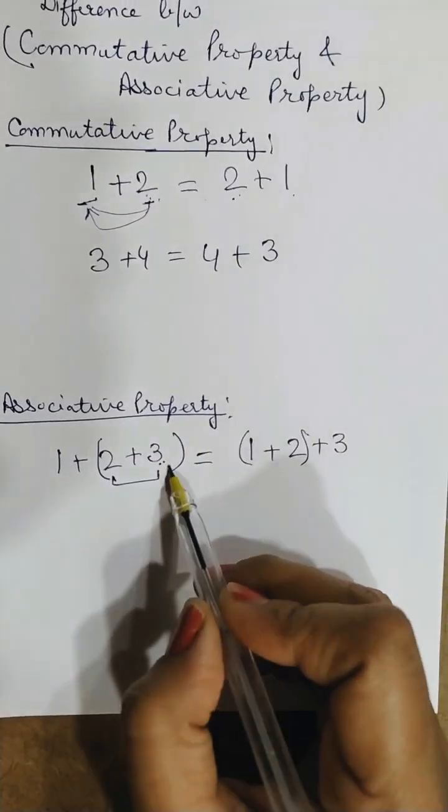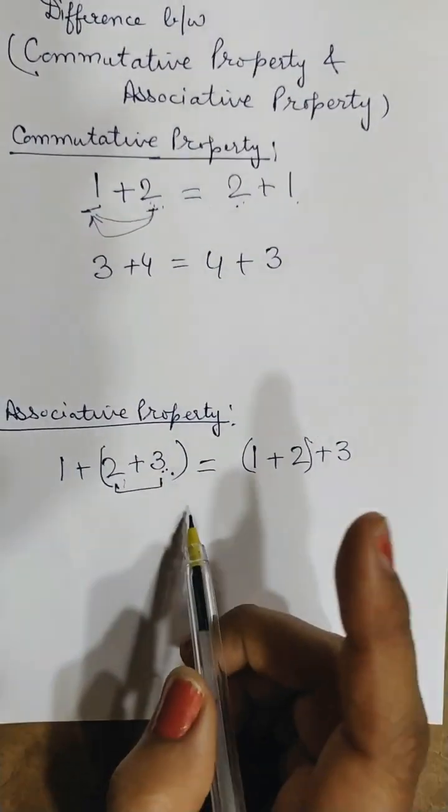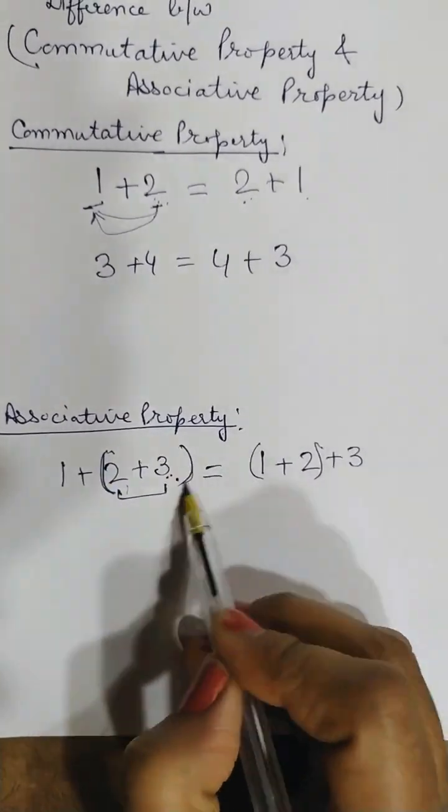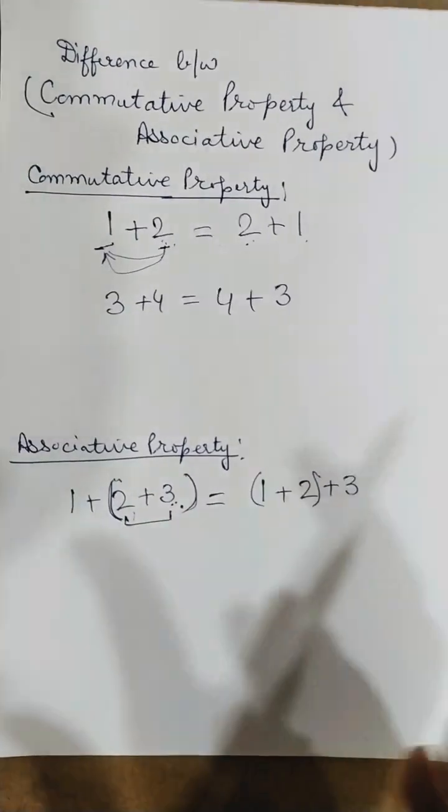So in associative property, their position is not changed. Their seats are not changed. But their club, their teams are changed.